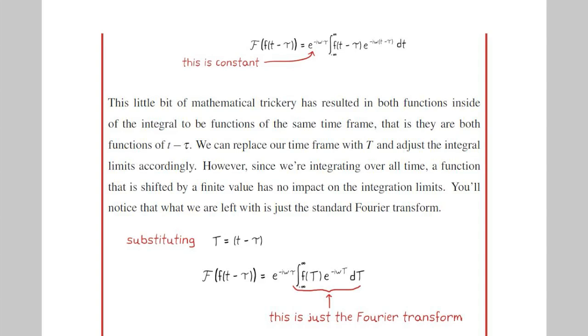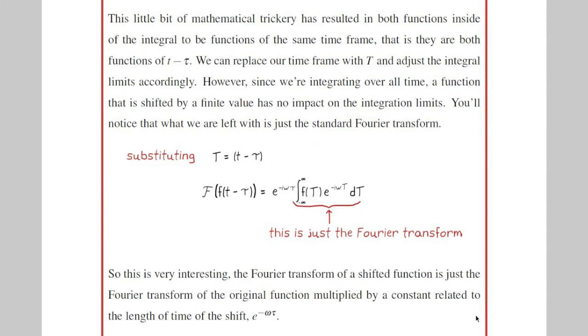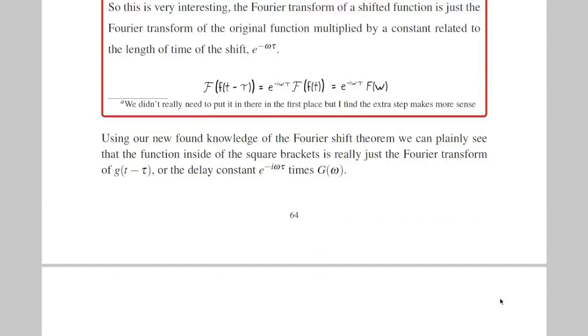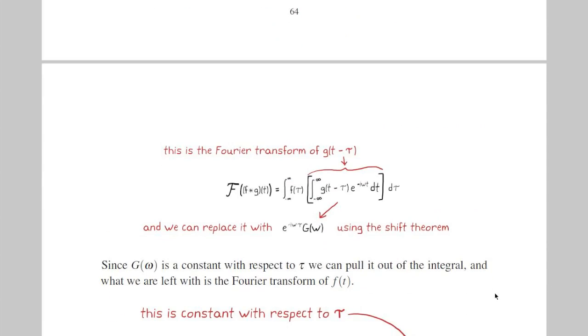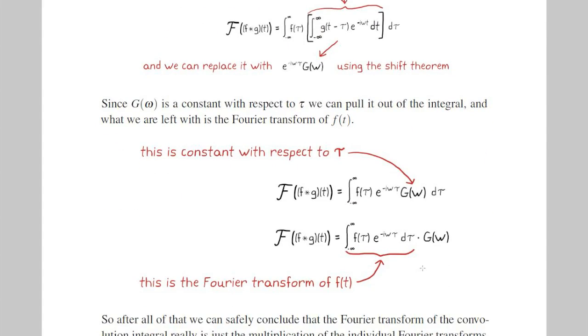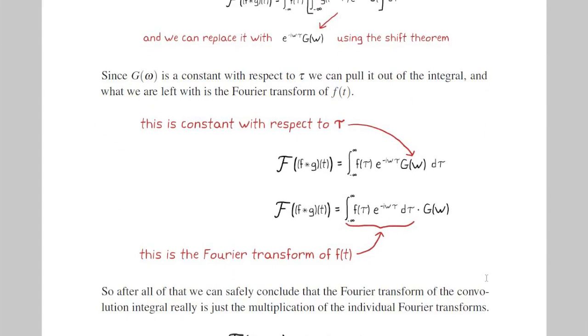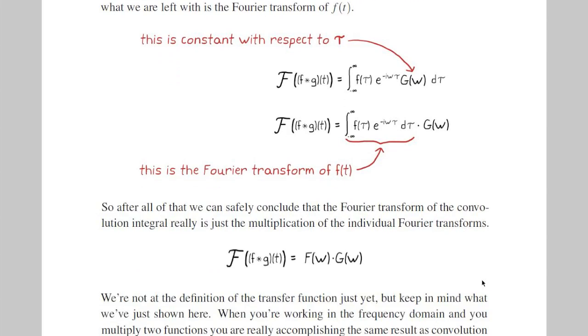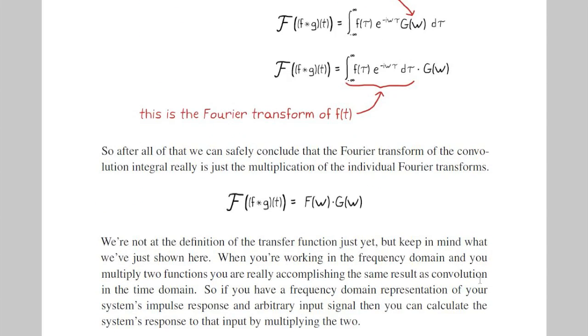So what this is saying is that the Fourier transform of a time-shifted function is just the Fourier transform of the unshifted function multiplied by a constant. And we can use the shift theorem in our proof to replace everything inside those square brackets, which is just the Fourier transform of a shifted function, with e to the minus i omega tau times capital G of omega. Finally, what we're left with is just the Fourier transform of f of t, which is capital F of omega. So after all that math, we're left with the Fourier transform of f times the Fourier transform of G multiplied together.